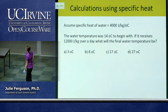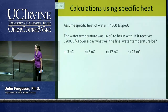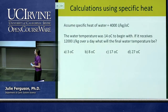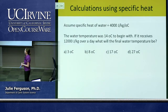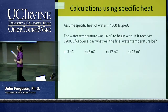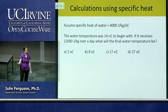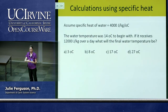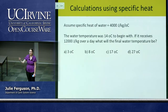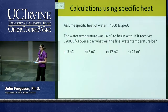We can do simple calculations with specific heat. If we round the specific heat of water to 4,000 joules per kilogram per degree Celsius, and we start with water at 14°C and add 12,000 joules per kilogram, what's the final temperature? 12,000 divided by 4,000 = 3 degrees increase, so the final temperature is 17°C. If we double the mass to 2 kilograms with the same energy, the temperature only increases by half a degree. The answer was 17°C — 85% got it right.